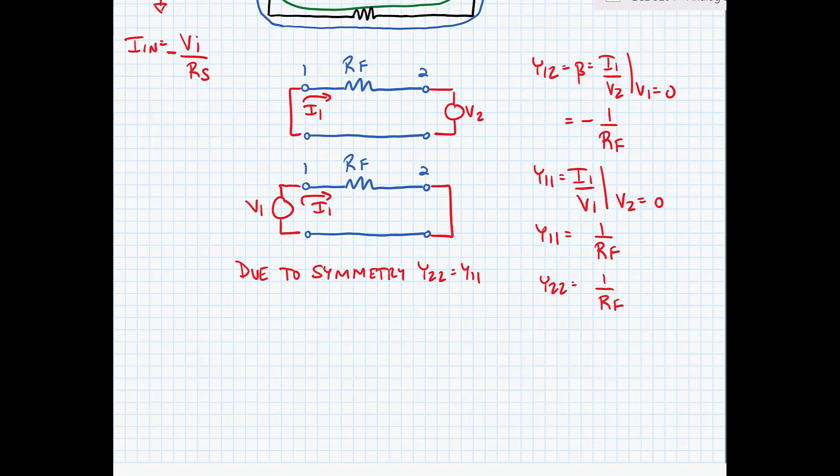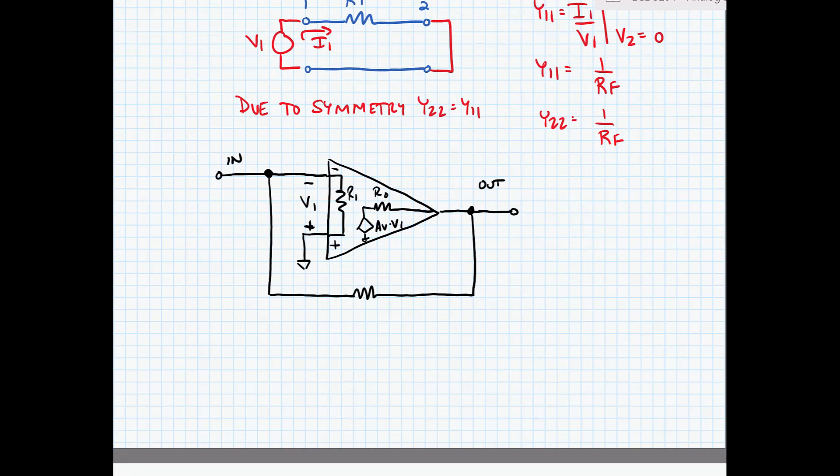Alright, now let's calculate our forward gain and the open loop. We'll have to load the amplifier with our Y11 and Y22 parameters. Alright, so here's my amplifier. Now I'm going to break the feedback loop and replace the feedback loop with the load.